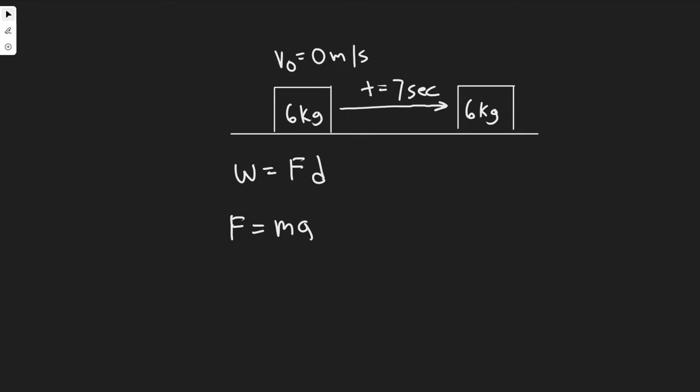The first thing you always want to do is draw what's going on. We have this 6 kilogram box, and we know it's going to start at rest, so its initial velocity is 0 meters per second. It's going to be pushed with an acceleration of 2 meters per second squared for 7 seconds. So we're going to have the box here then. What are we solving for in this problem?